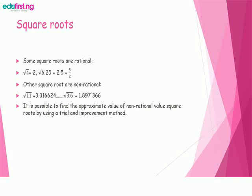The square root of 11 equals 3.3166 and so on. The square root of 3.6 equals 1.897336. In this case, it is possible to find the approximate value of non-rational square roots by using a trial and improvement method.